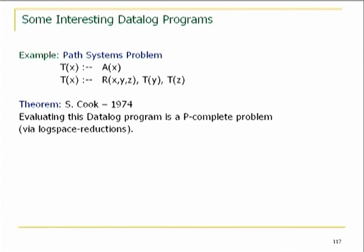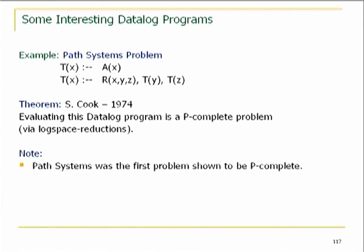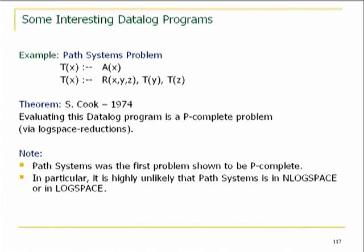Data log can express P-complete problems — that's the bottom line. In particular, this shows that datalog evaluation is not in log space, because it can do P-complete problems. The data complexity is still in P-time, but higher than the log space we had before. So, what is linear datalog? Linear datalog is the fragment of datalog in which, in every rule, you have at most one recursive predicate. For instance, you can write cousin from sibling, where parent is given, sibling is defined as having one parent in common, and cousin is defined recursively.